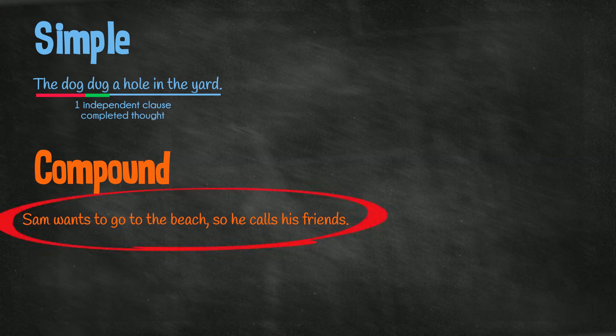And what makes this sentence compound? It's made up of two independent clauses, each with a subject and a verb, joined together by the coordinating conjunction, so.